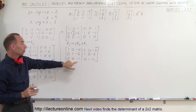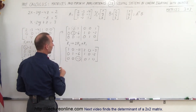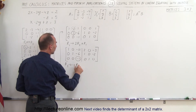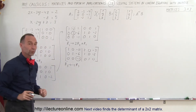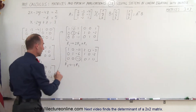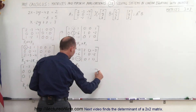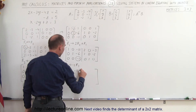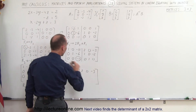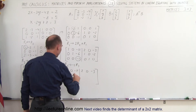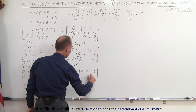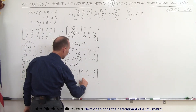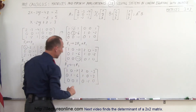Now I have the first two columns in the correct format. I need to change the third column diagonal entry to a positive 1, so I take row 3 and replace it by -1 times row 3, simply changing all the signs. Row 3 becomes: 0, 0, 1, 0, -1, 0.